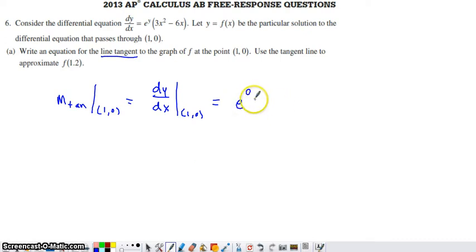So we're looking at e to the 0 times the quantity 3 times 1 squared minus 6 times 1. If you simplify this, anything to the 0 power is going to be 1. 3 times 1 squared is 3, and then minus 6. So I guess we're looking at 1 times negative 3 or negative 3 for our slope.